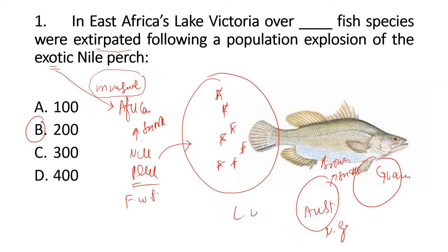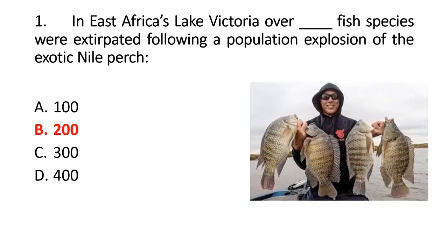When we introduced this Brown Tree Snake to another island, there were 18 species of birds. They had to end — 11 of them gradually went extinct. That is also a type of invasive species example. So for this question, the right option is Beta.